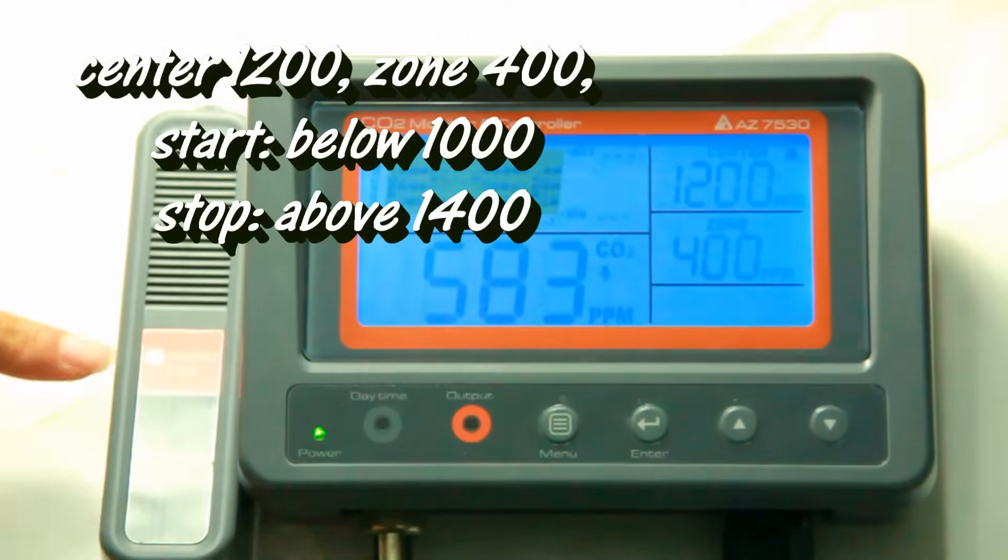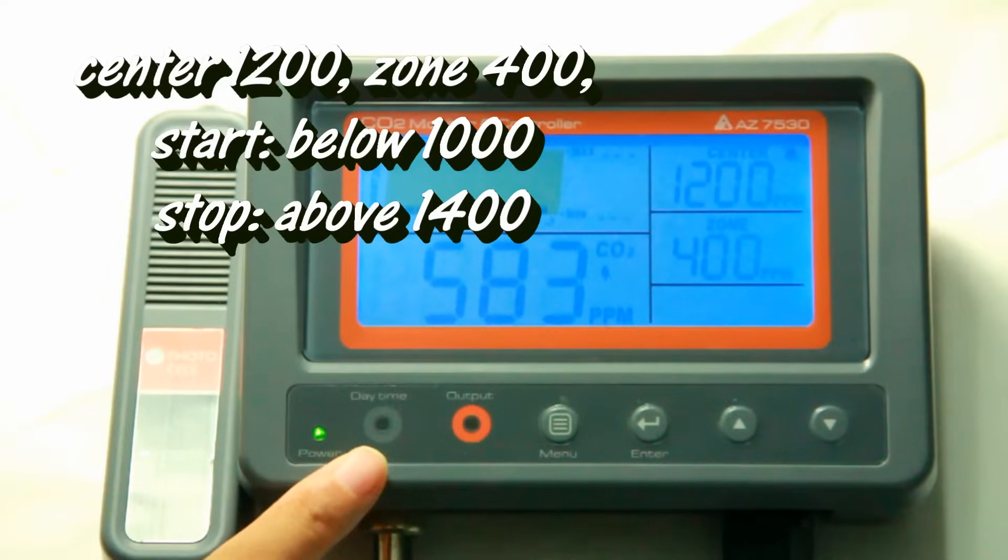Since it is in plant mode, the external device will be powered on while the CO2 is lower than 1,000 ppm and stopped while the CO2 is higher than 1,400 ppm.